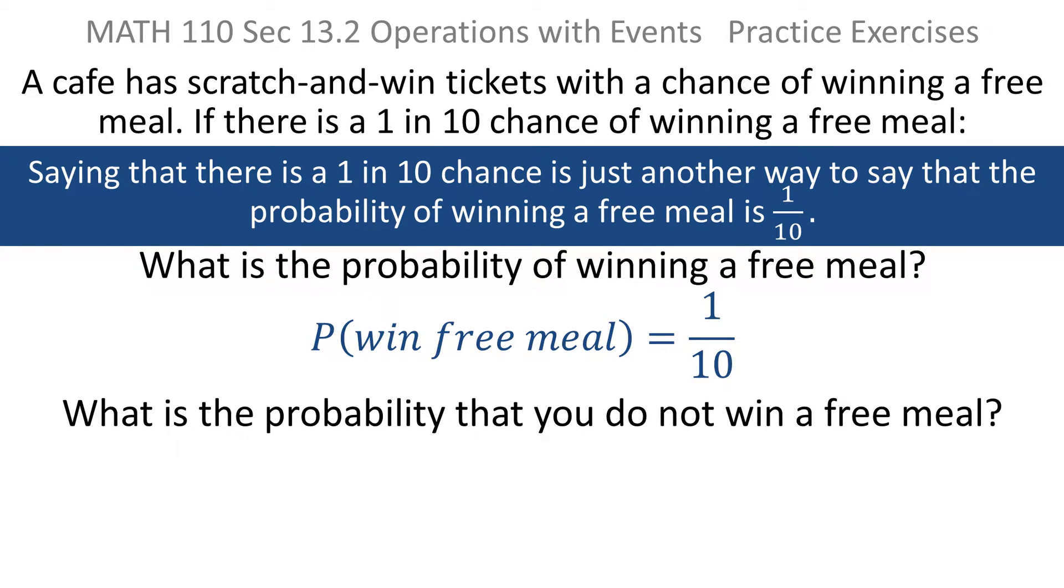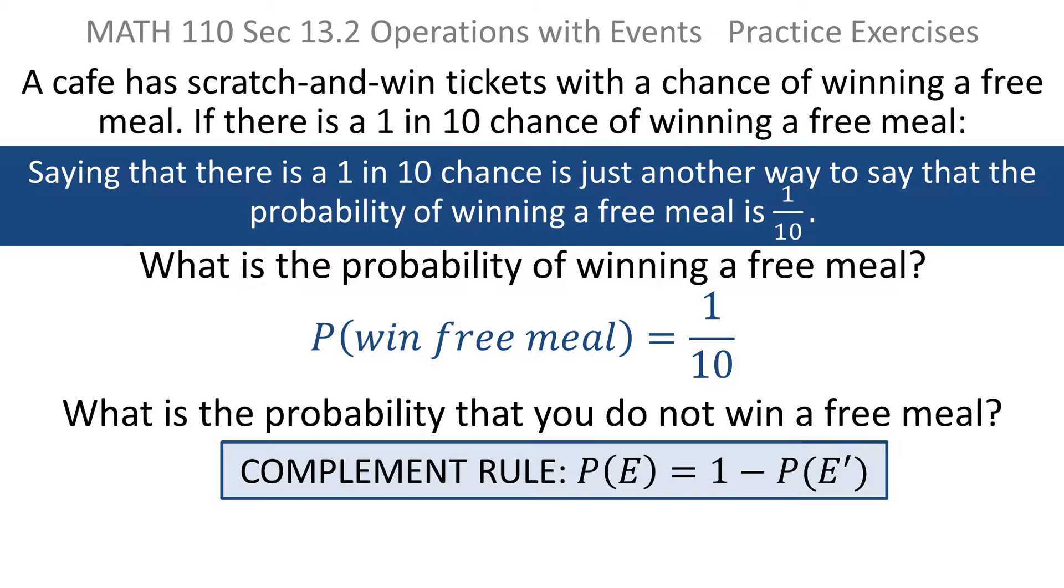What's the probability of not winning a free meal? Well, the complement rule, again, applies here. The probability of an event is 1 minus the probability that the event does not occur.